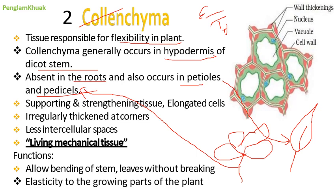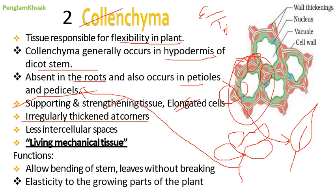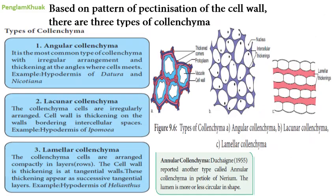Colenchyma cells are supporting and strengthening tissue. The cells are elongated with irregularly thickened corners. They have less or negligible intercellular space. They are alive and are called living mechanical tissue. Functions include allowing bending of the stem when the wind blows without breaking, and providing elasticity to the growing parts of the plant.